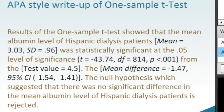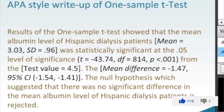The mean difference, once again our point estimate, is negative 1.47, and then our population estimate is a 95% confidence interval from minus 1.54 to minus 1.41. We close out with the null hypothesis — which suggested there was no significant difference in the mean albumin level of Hispanic dialysis patients — being rejected.